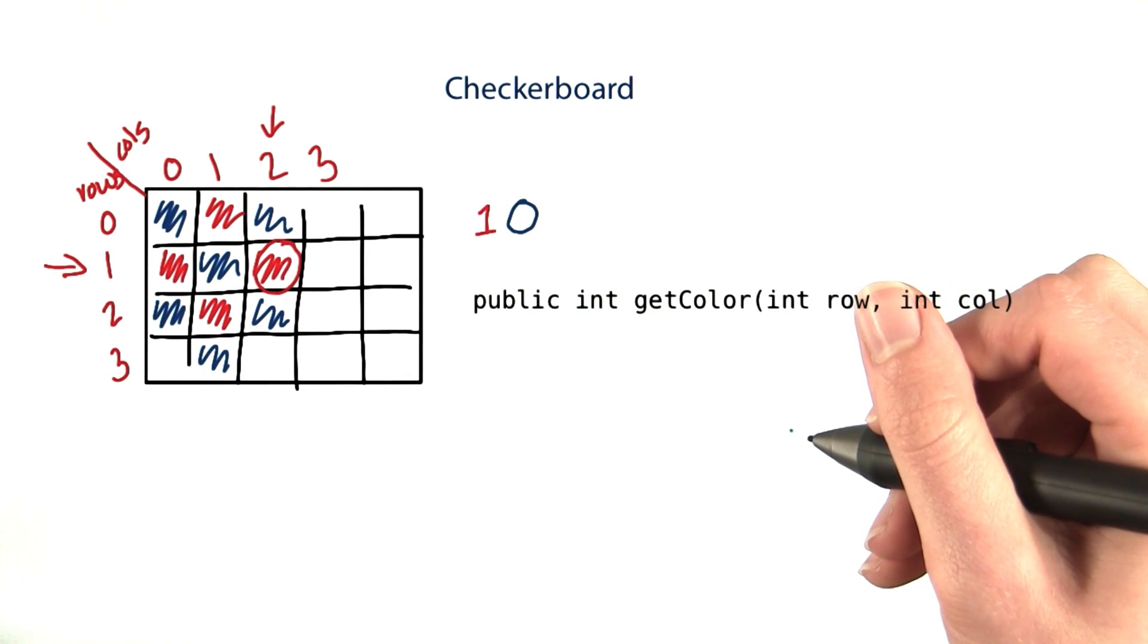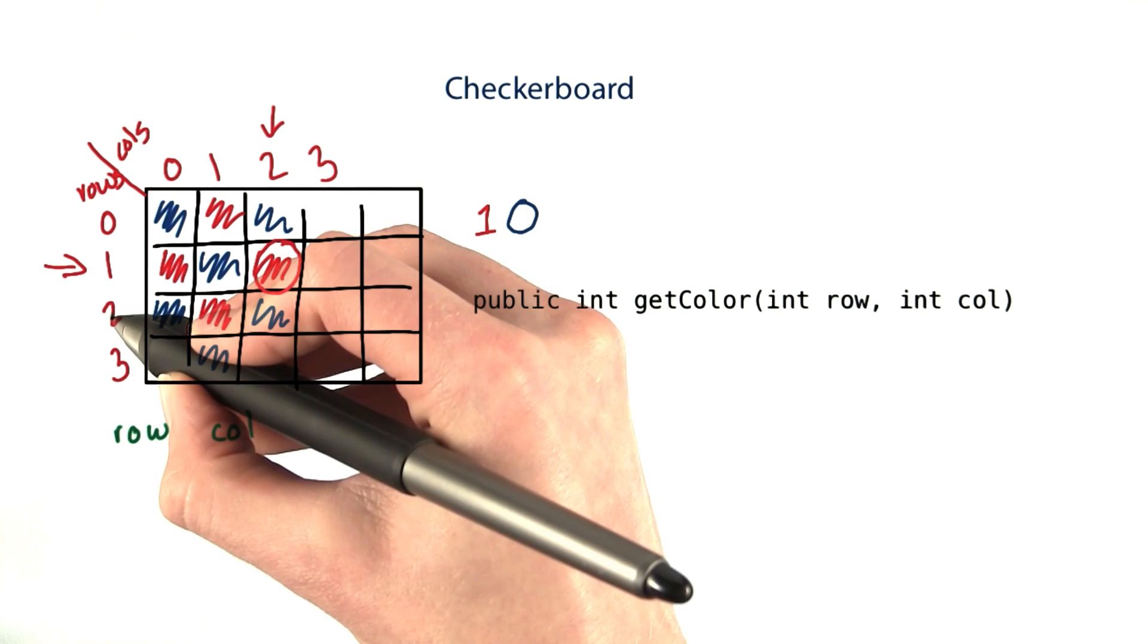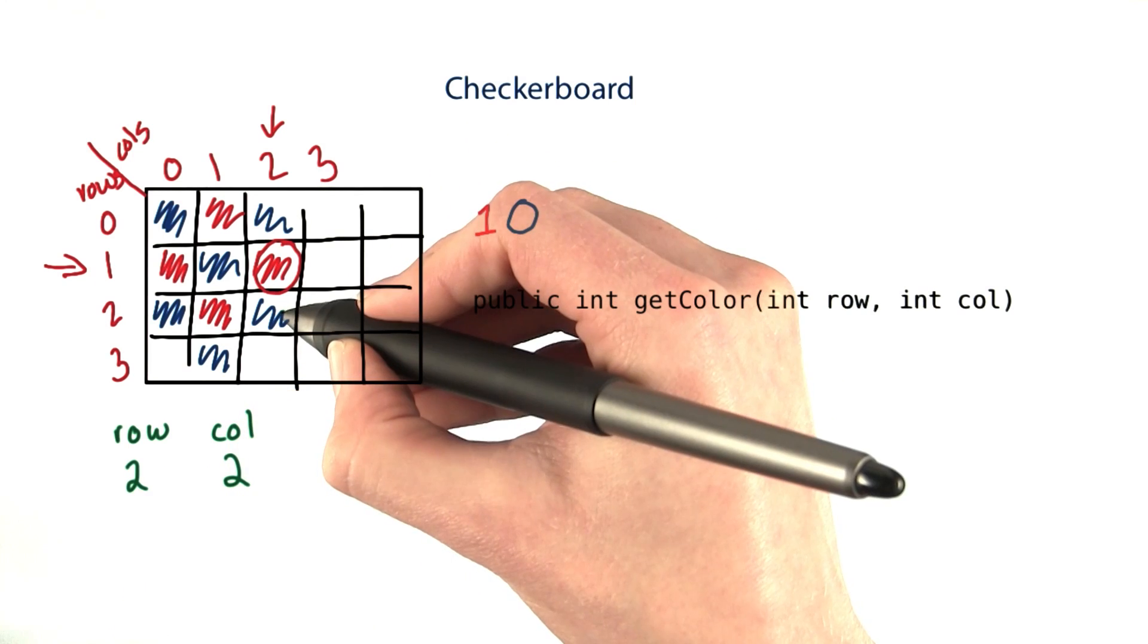This problem could get pretty complicated, so let's write some test cases out. I'll index spots by row and column. So 2, 2 would be right here, and that spot should be blue.